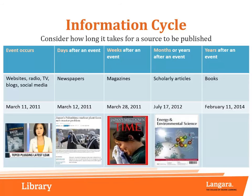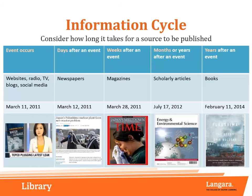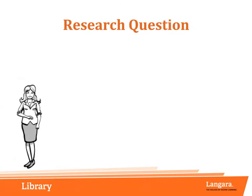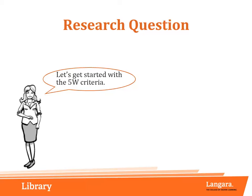Several months or even years later, articles will be published in scholarly journals. This is because scholarly articles require extensive research, editing, and peer review. We will return to the topic of peer review in a later module. Finally, several years after an event, you will see books appear that are extremely well-researched accounts of the event. With these ideas in mind, let's get started with the 5W criteria.